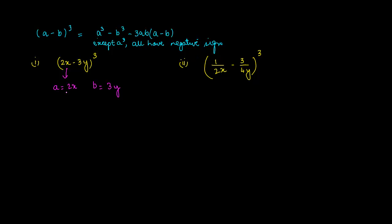Once you have these two values, you just put them into this equation, which is a cube minus b cube minus 3ab times a minus b. So my a is 2x, 2x cube minus b is 3y, 3y cube minus 3 into a into b into a minus b.